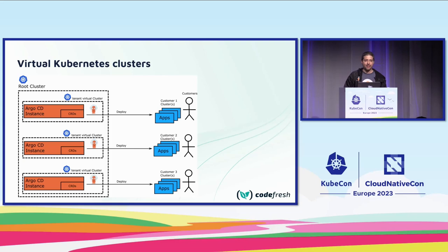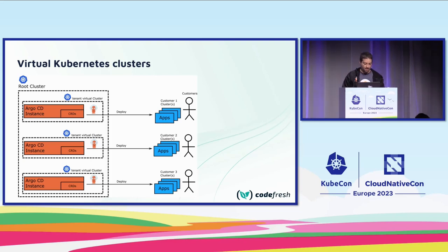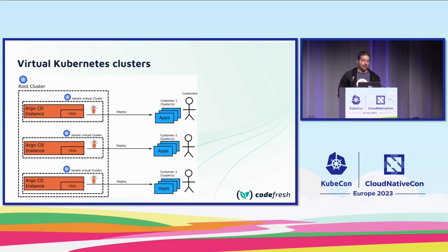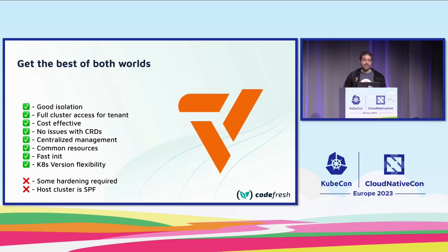In this model, we have a root cluster like before, but on its namespace we deploy another Kubernetes cluster — a real Kubernetes cluster. You can install K3S, K0S, or even EKS. It passes all the compatibility tests like any other Kubernetes cluster, with its own fully compatible API. We then install an Argo CD instance there, and Argo CD thinks it's in a real cluster, but it's not. Each Argo CD instance gets its own CRD — it's a standard namespace installation — and customers connect their own clusters from there.